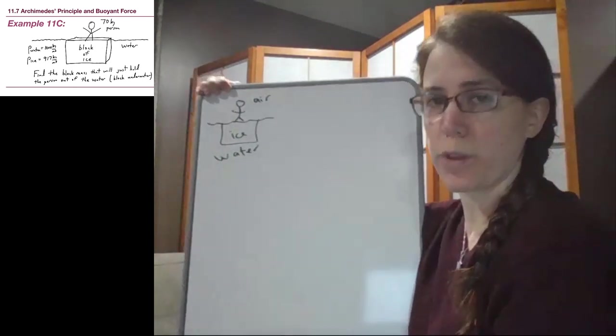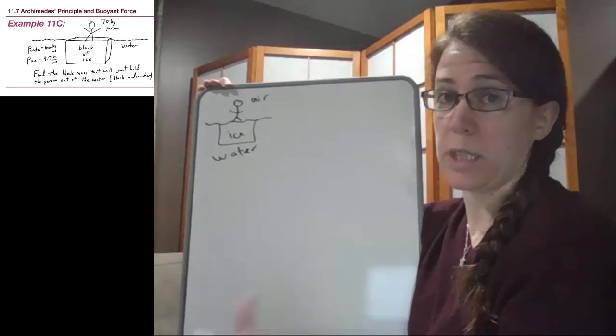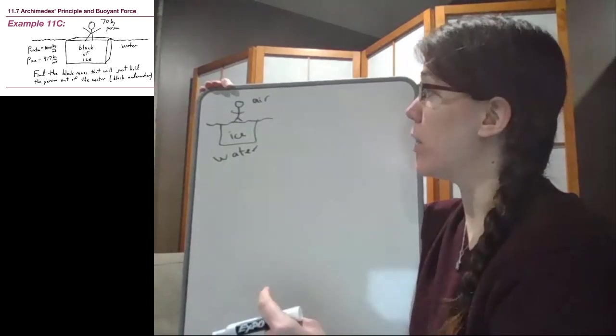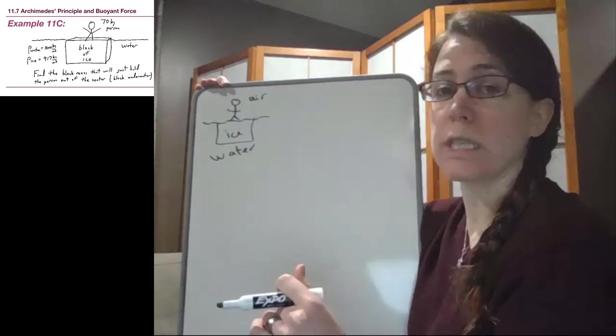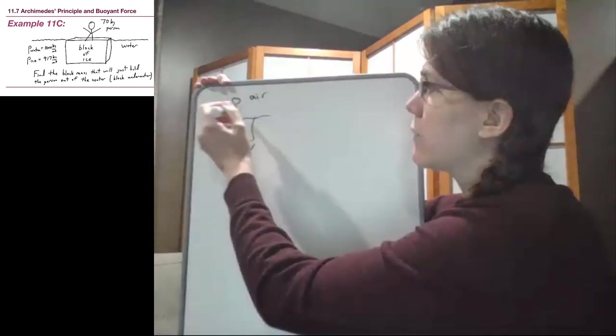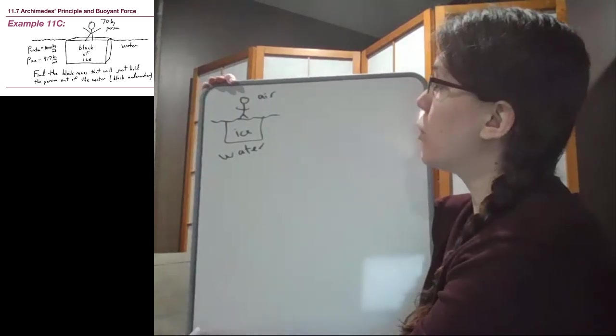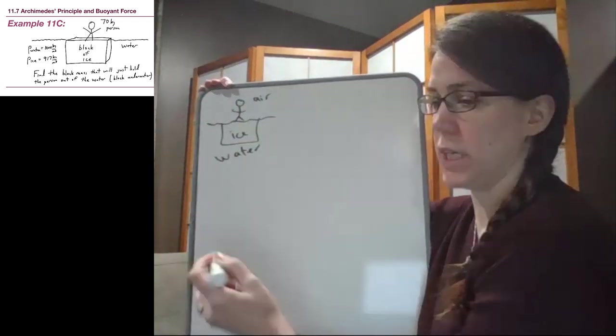Now we talked in the lecture video, and it's worth commenting here, that when we have solid objects, like people, in air, the buoyant force is small enough that we can ignore it. So we won't have to worry about the buoyant force of the person for this example, but we do have to worry about the buoyant force of the ice.